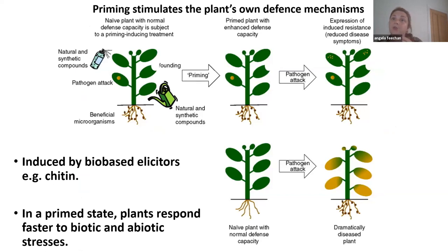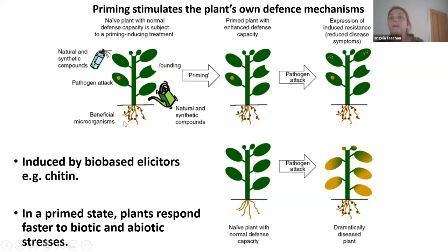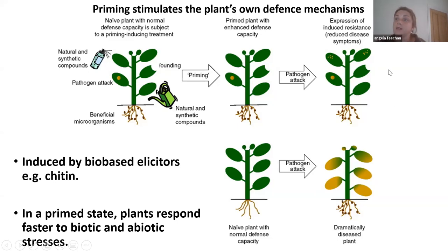We also wanted to see if the product has a priming effect. What I mean by that is — if you spray it on or add it to the soil, can it boost the plant's own immune system? It's a bit like a vaccination. You add this biological, it boosts the plant's own defense system, and when it does meet a pathogen, you get much less disease symptom because it's been primed. Chitin is one example of something that has evidence it can prime against disease.